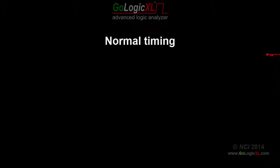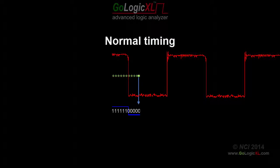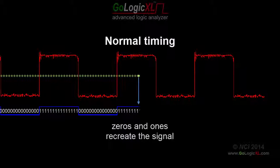As the input signal arrives, the logic analyzer compares the voltage at each sample point to the threshold level. Voltages above the threshold level are a one, and voltages below the threshold level are a zero. The stream of zeros and ones recreate the original signal.